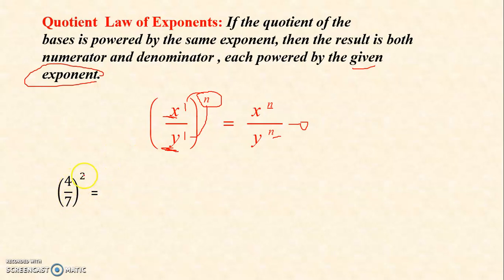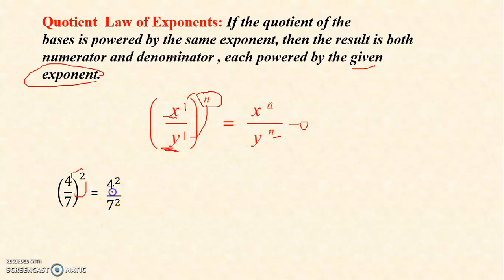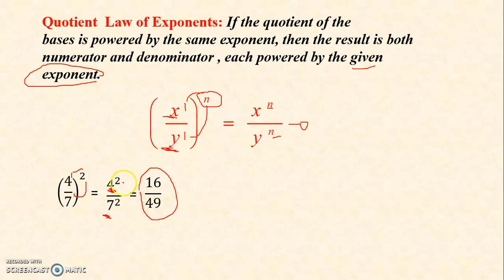4 over 7 raised to 2. What is the exponent of 4? It is 1. The exponent of 7 is also 1. So you follow the same procedure: 1 times 2 is 2, and 1 times 2 is 2. So the exponent of 4 is 2 and the exponent of 7 is 2. That is not yet the final answer — we simplify it. You cannot subtract the exponents of 4 and 7 because they don't have the same base. So 4 raised to 2 is 16, and 7 raised to 2 is 49. The final answer is 16 over 49.